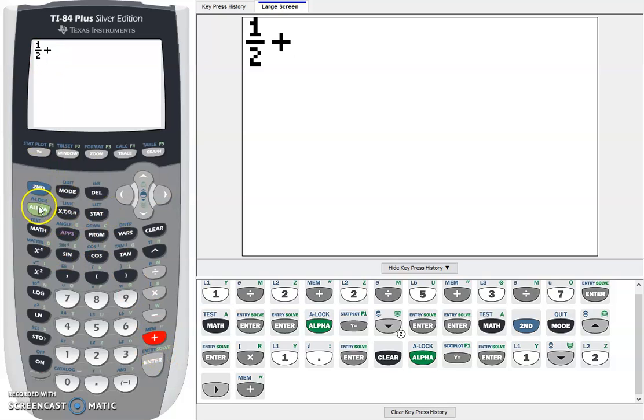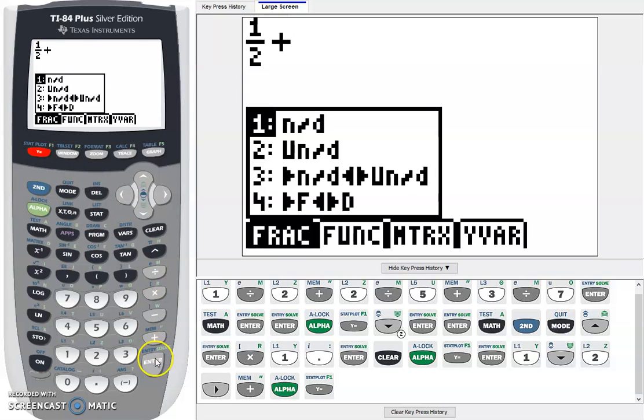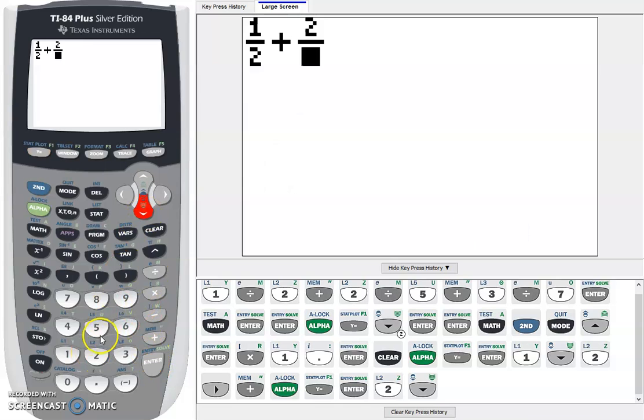So now we have 1 half and we're going to do alpha y equals again. Press that same thing. Now we're going to do 2 down arrow fifths. Get out of it. Now a plus sign and then we're going to do 3 fifths.